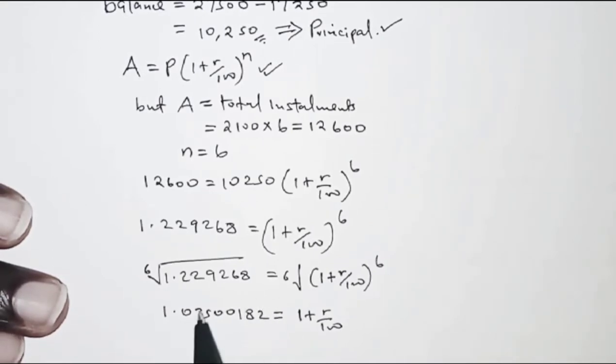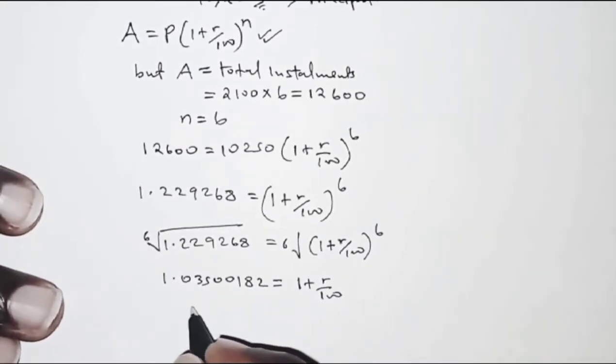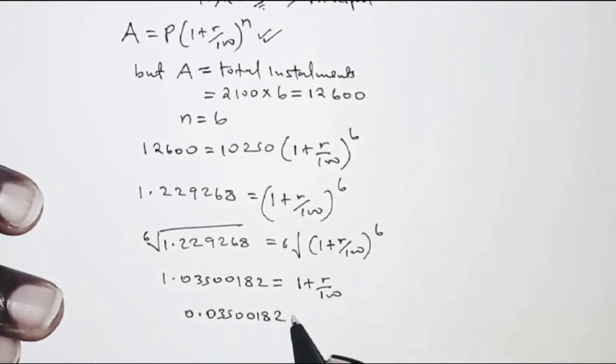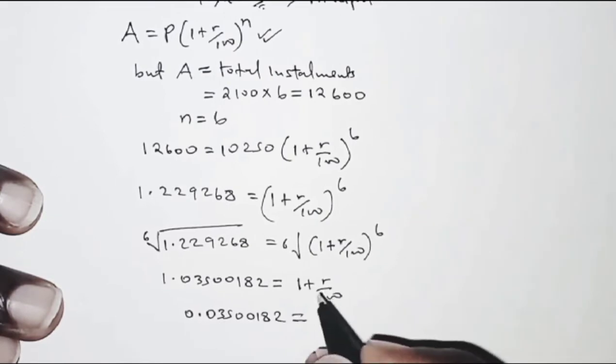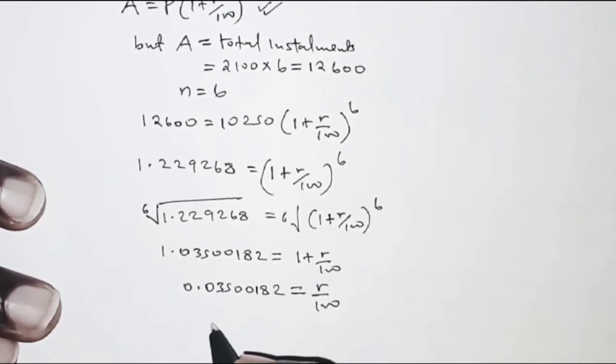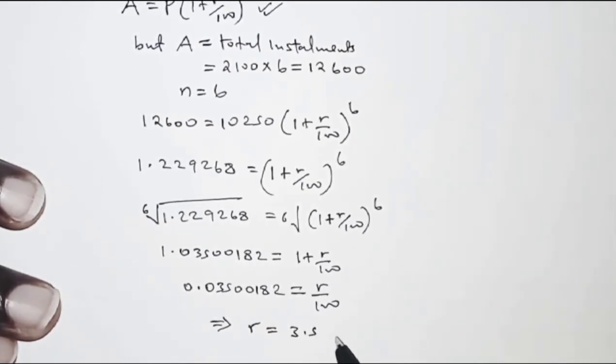So taking 1 to the left hand side, we are going to have 1.03500182 subtracting 1, and on the right hand side we have r over 100. So multiplying both sides by 100, we realize that the rate is equal to 3.5 percent.